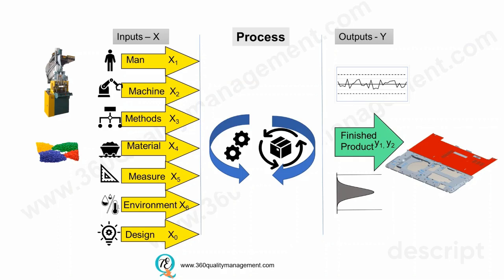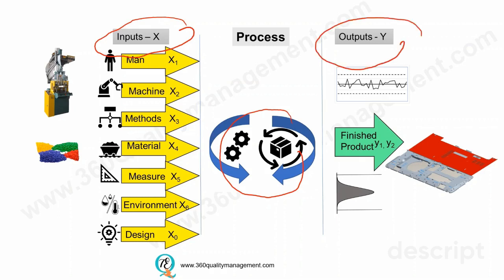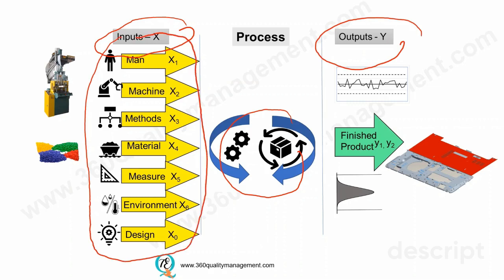A process consists of a series of actions which transforms all the process inputs into a process output. Typically, process inputs are the main machines, methods, measures, and materials, as well as environment and design.